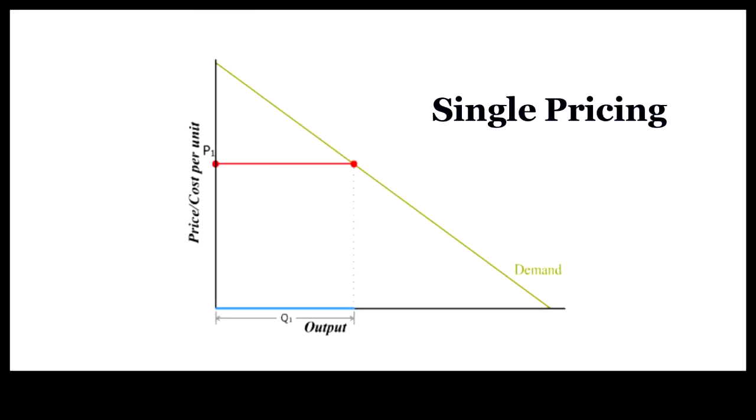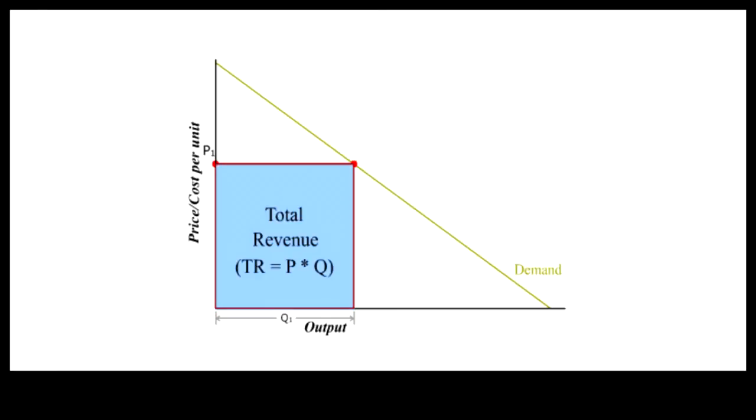Because the same price applies to all units sold at any given price level, total revenue is equal to price times quantity sold. Here TR is represented by the blue area.